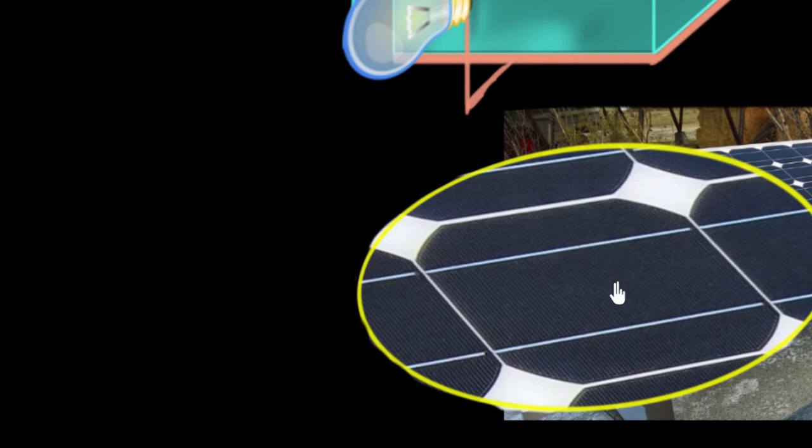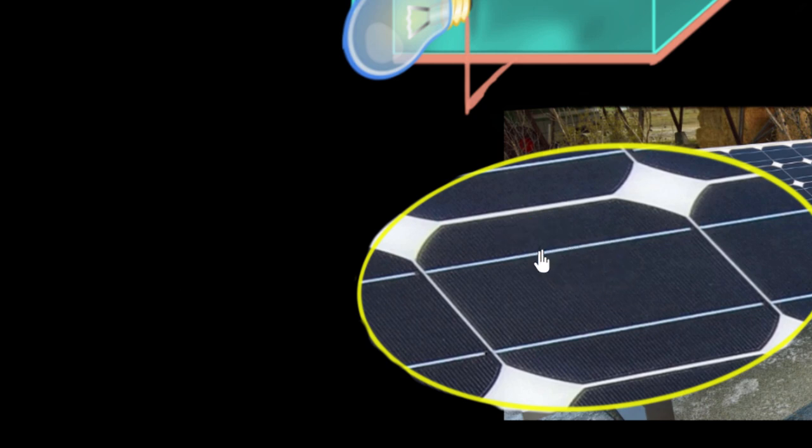They are the ones that increase the metallic contact area. And this thick wire is like the wire that collects all the electrons, so it's called the bus. It's sort of like a bus, collects all the electrons from these thin fingers.